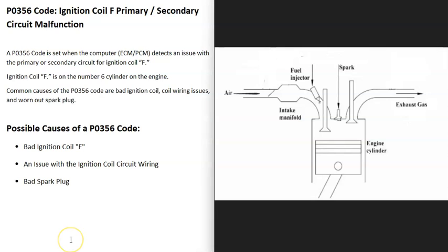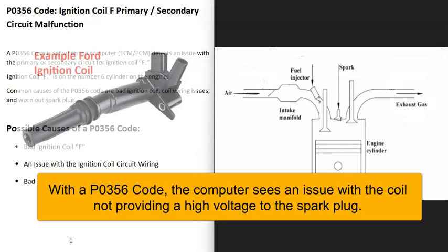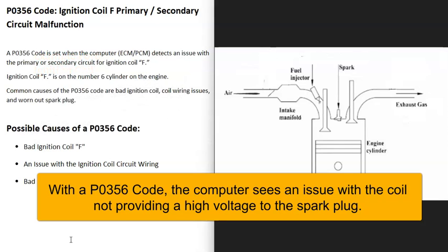Each cylinder inside the engine needs the right air-fuel ratio mixture. At the right time, a spark ignites the mixture and sends the piston down, which turns the crank and keeps the engine running. When you get a P0356 code, something's gone wrong with this on one of the cylinders.